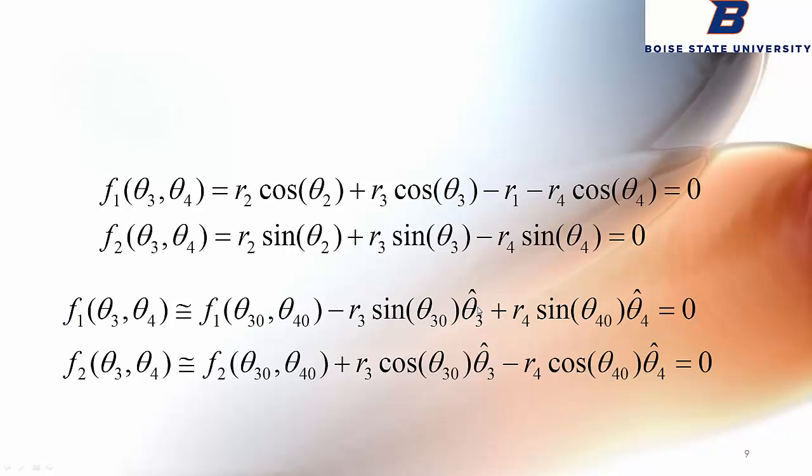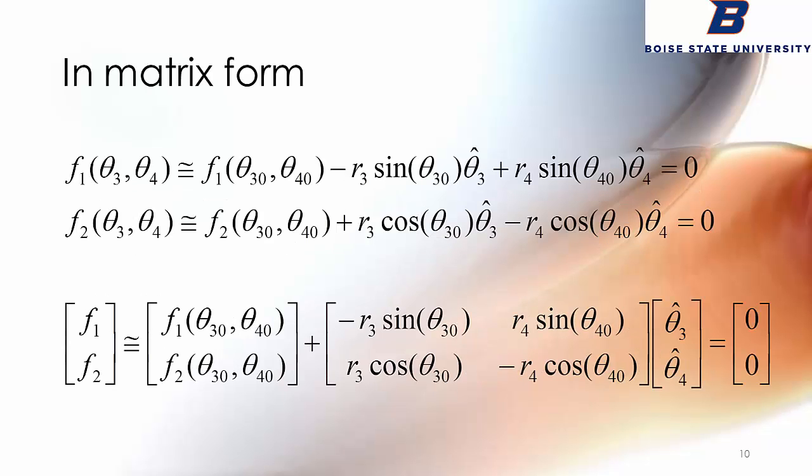The partial derivative of this function with respect to theta 3 - there's a lot of zeros. The only place you'll get a non-zero result is if theta 3 exists in the term. The derivative of cosine of theta 3 with respect to theta 3 is minus the sine of theta 3. The constant R3 just multiplies through linearly. So we have minus R3 sine of theta 3 evaluated at the zero position times theta 3 hat. We have numerical values for these theta 3 zeros, so this sine of theta 3 just evaluates to a number. So this is just a coefficient.